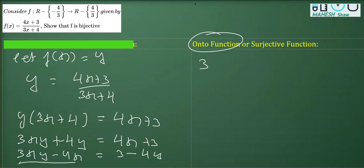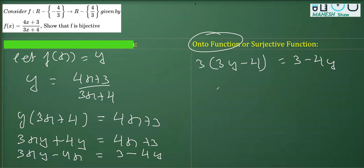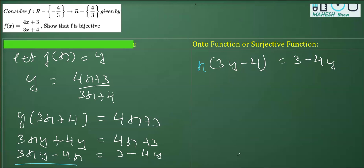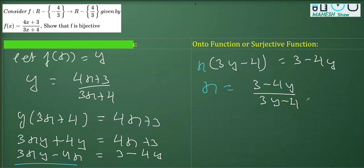Taking x as common from the left side: x(3y − 4) = 3 − 4y. Therefore x = (3 − 4y)/(3y − 4). As you can see, this is not defined only for one value of y — that is, y should not be equal to 4/3.